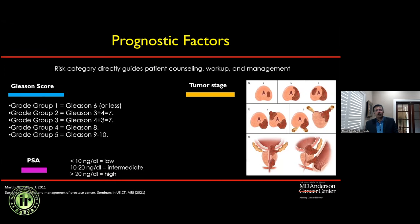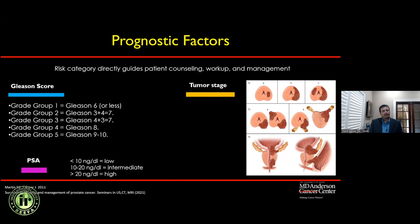Moving on to the second half of the talk on staging. The first part was about applying PI-RADS when screening the prostate for cancer identification. But if cancer is already confirmed on pathology and biological assessment, the key is to stage the tumor. Prognostic factors include Gleason score, PSA values, and T-staging, which mainly helps categorize prognostic risk.